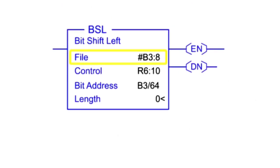The file field contains the address of the register that will be manipulated. The control field stores the status of the instruction. The bit address contains the source location for the bit being shifted into the register. Length is the number of bits. The actual length is determined by the application.